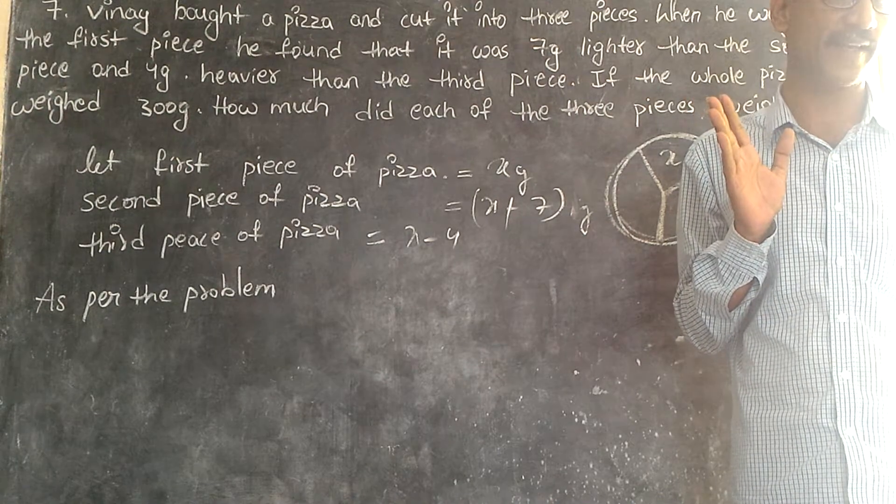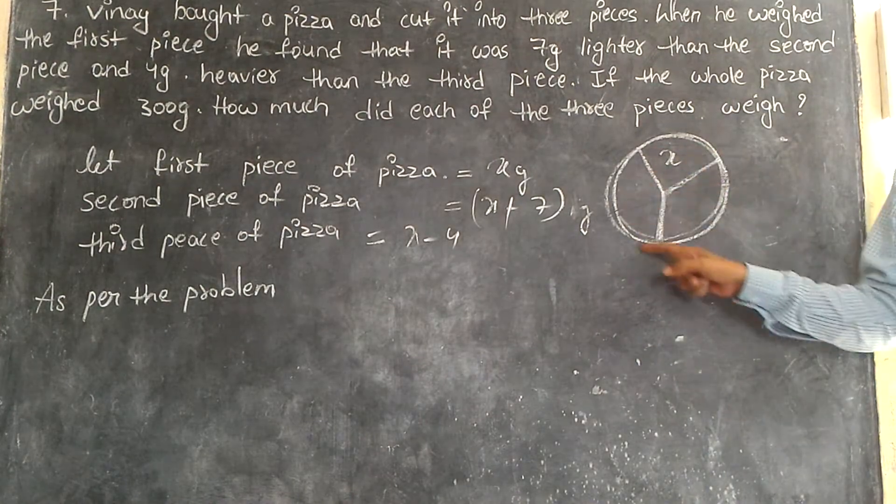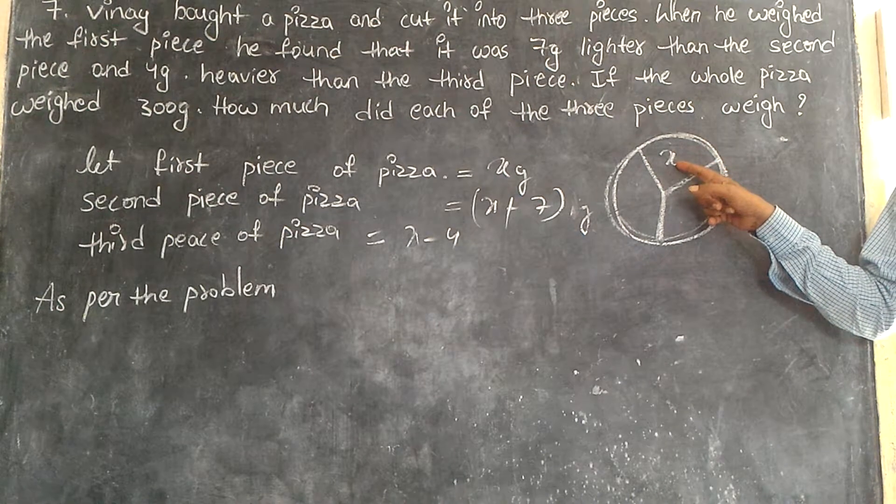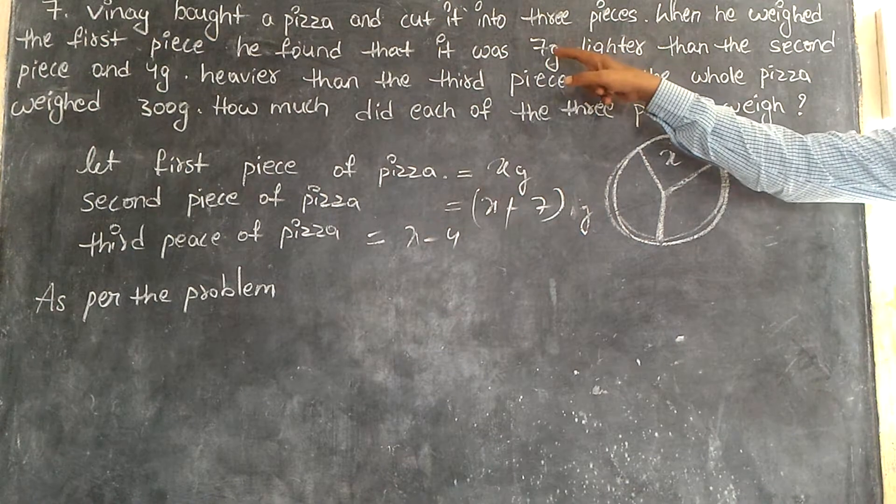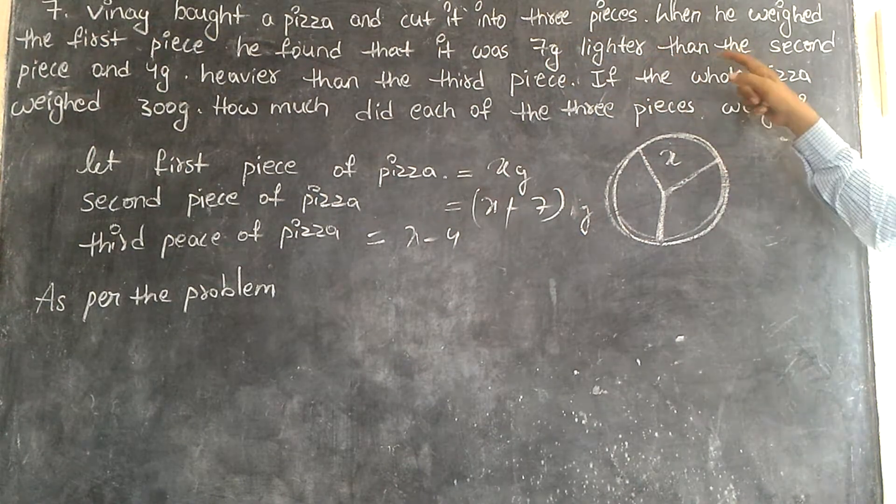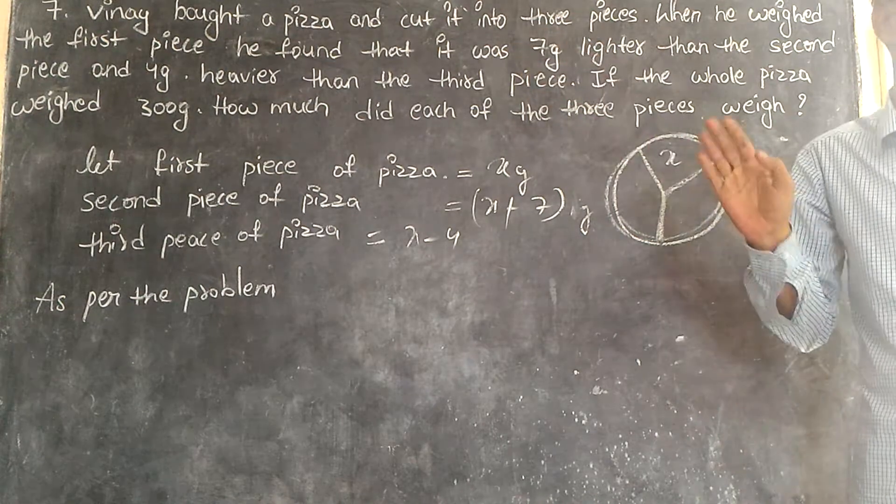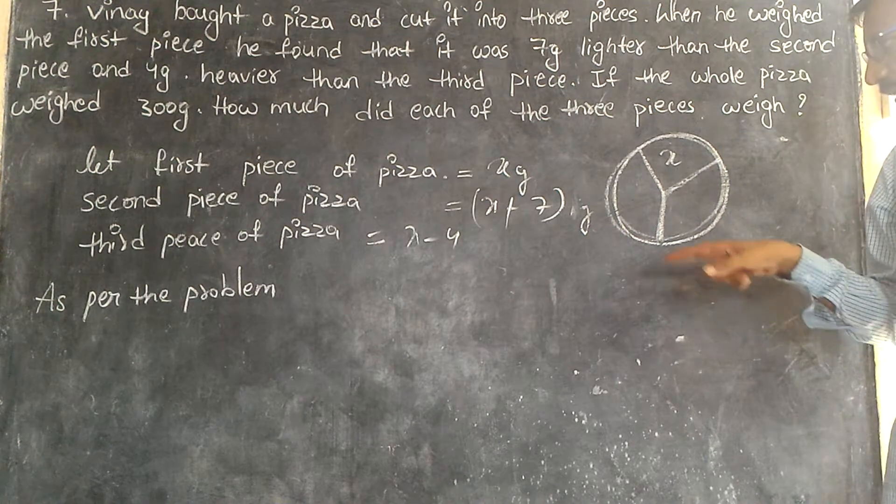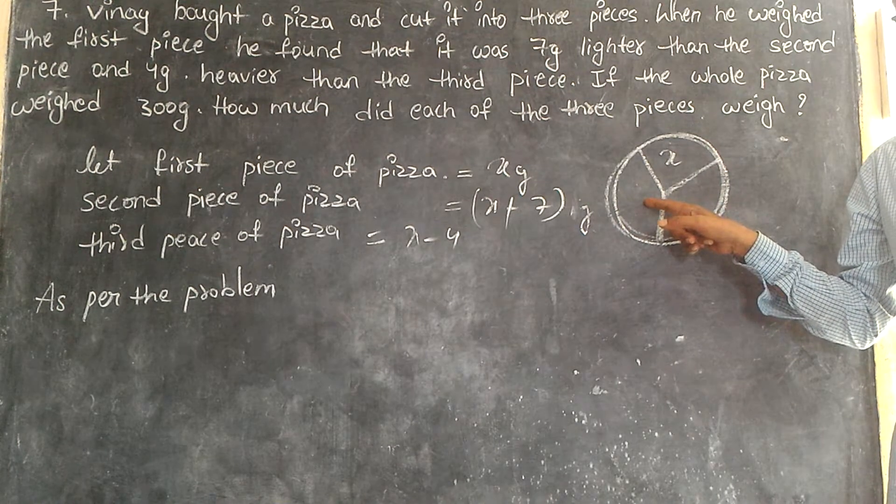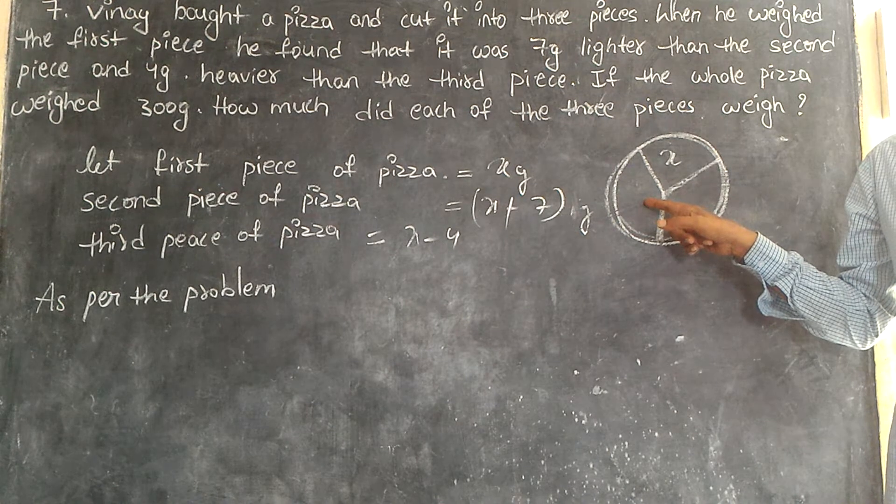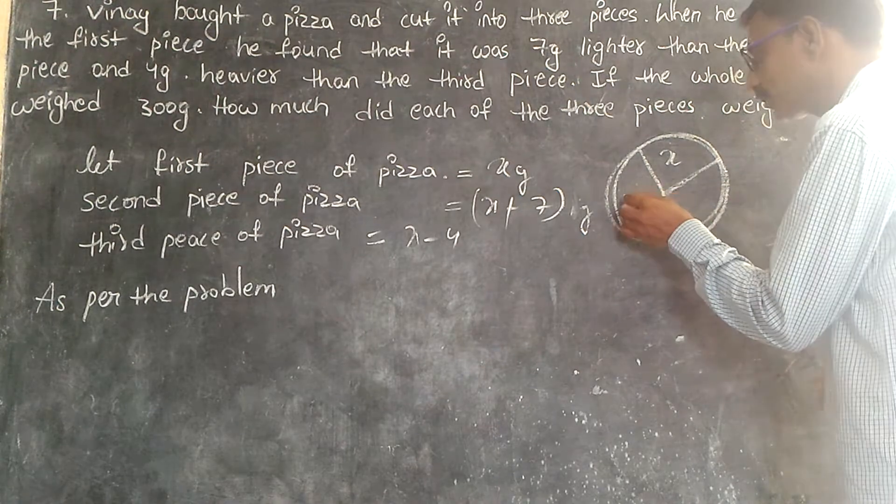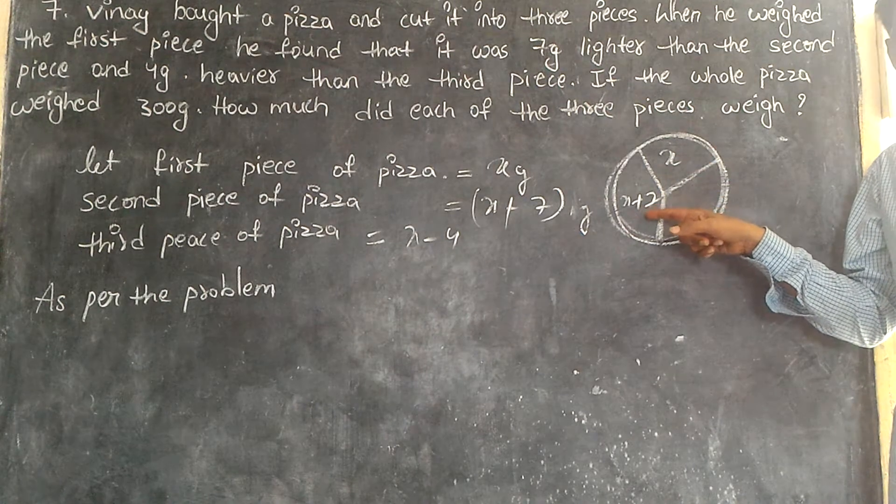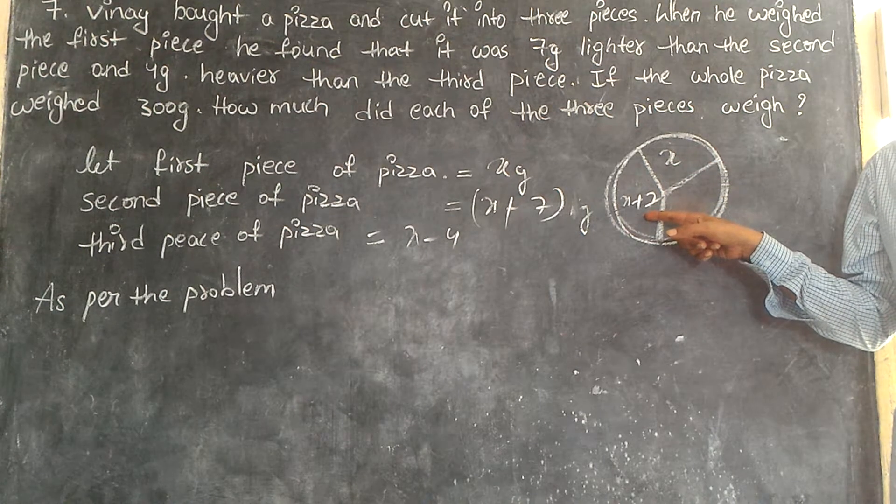Is there any doubt in it? Can I explain again? This is one pizza cut into three pieces. And the first piece is seven grams lighter than the second piece. Suppose this is the second piece. How many grams lighter? Seven grams. The other reason I have taken X plus seven. Now, the first piece is seven grams lesser than the second piece. This is more, seven more grams compared to the first piece.